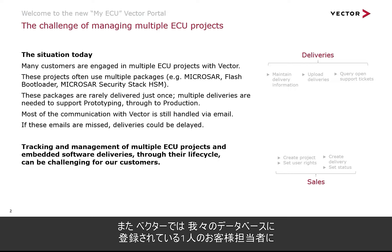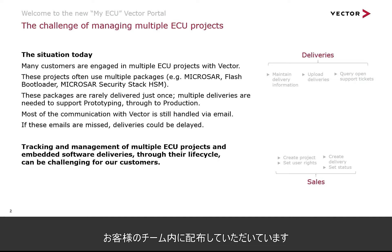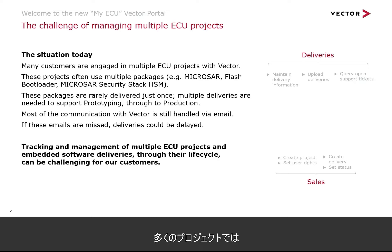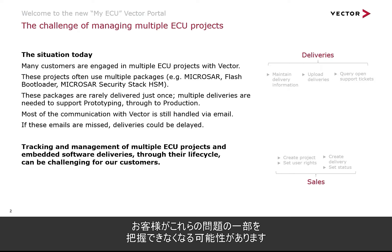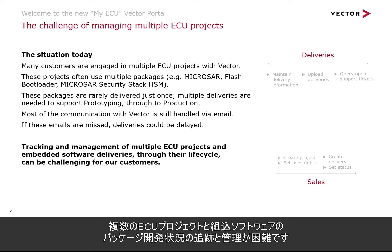Vector sends deliveries and issue reports to a single customer contact person listed within the Vector database, which relies on that single contact person to distribute the delivery within the customer company where necessary. Open issues, support requests, and warranty topics are tracked within different systems, and it's possible for many projects that our customers might lose visibility of some of these issues. Overall, this can make tracking and management of multiple ECU projects and embedded software deliveries at different stages through the lifecycle challenging for our customers.